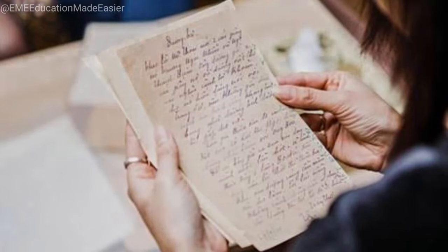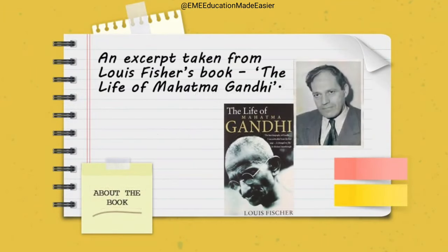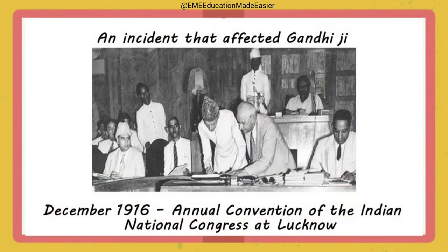Today I am here with the chapter 'Indigo,' taken from the Flamingo book of class 12th. This story is basically an excerpt taken from Louis Fischer's book 'The Life of Mahatma Gandhi' — an excellent book containing a first-hand account of British high-handedness and oppressive policies that led to the involvement of the masses in the freedom movement. In December 1916, Gandhiji had gone to Lucknow to attend the annual conference of the Indian National Congress. Here he met Rajkumar Shukla, a poor farmer from Champaran, who requested him to visit his place to see the plight of the indigo planters.